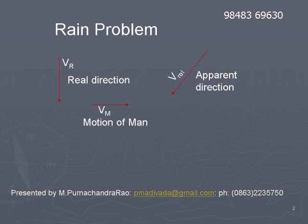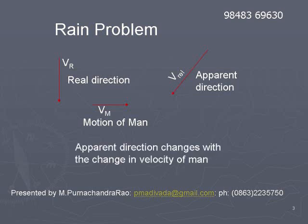Rain problem. When rain is falling, if we travel or ride on a vehicle, even though the rain is falling vertically, it appears as though it is falling at some angle with the vertical. This is known as the apparent direction of the rain.